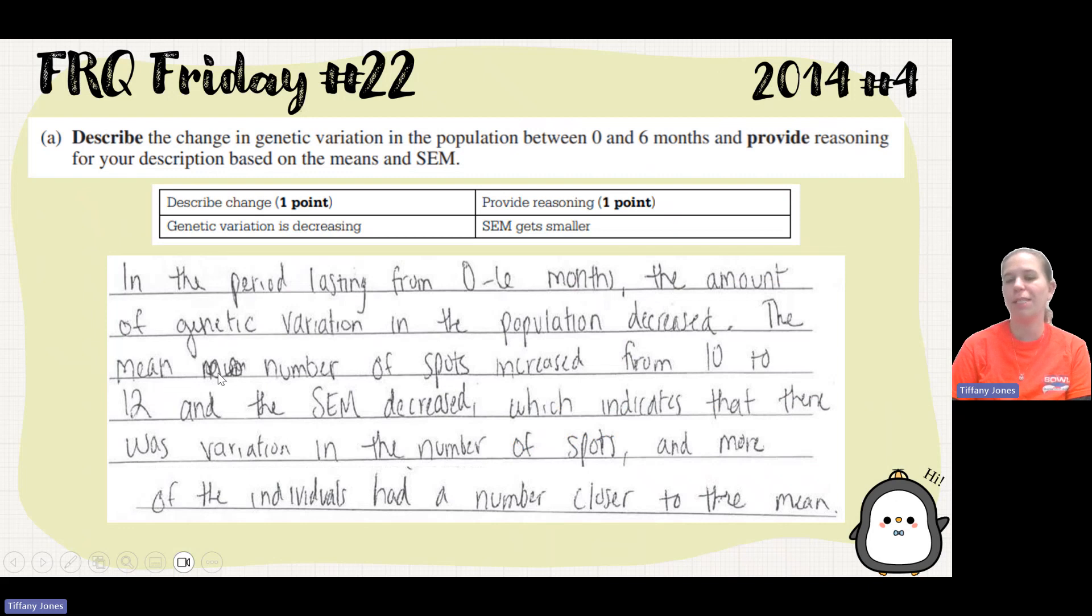So a student says in the period lasting from zero to six months, the amount of genetic variation in the population decreased. The mean number of spots increased from 10 to 12, and the SEM decreased, which indicates that there was variation in the number of spots, and more of the individuals had a number closer to the mean.